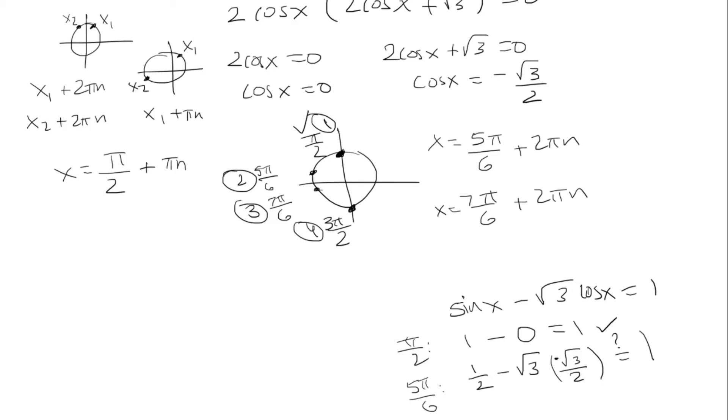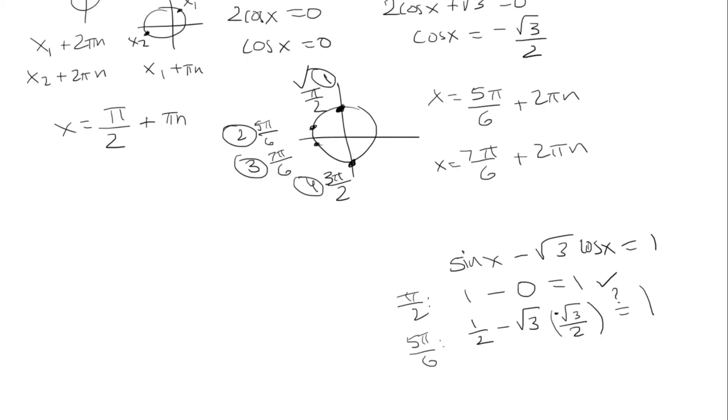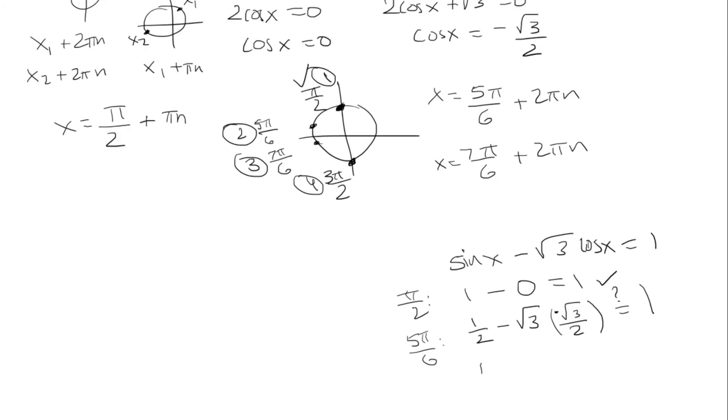We have 1 half and then plus 3 over 2. Well, that will just be 4 over 2, which is 2, and that does not equal 1. So we cannot use 5 pi over 6. That's bad.